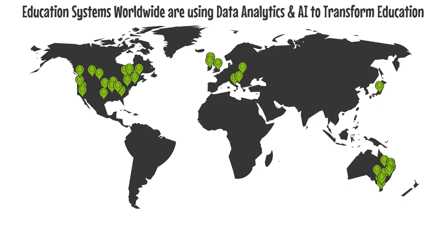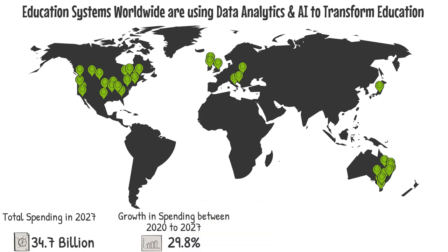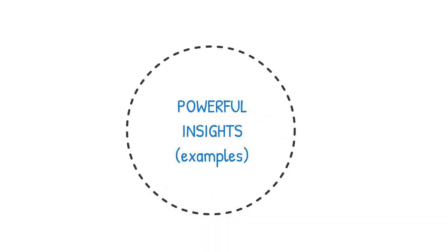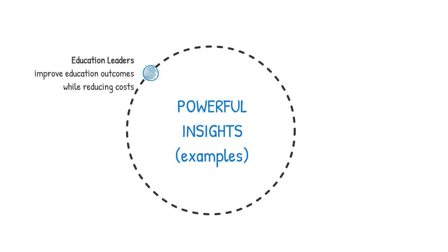This is just one example of how education systems around the world are using data analytics and AI to transform education. In fact, by 2027, education systems worldwide will be spending nearly 35 billion US dollars, with a growth rate of almost 30 percent. This growth is largely attributed to the need for data-informed decisions and making best use of available resources, while also reducing costs.